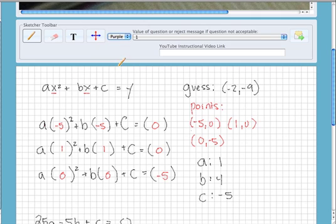Let's write it in purple. So I have 1 times x squared plus b is 4, so 4x minus 5, where there was a c, is equal to y.